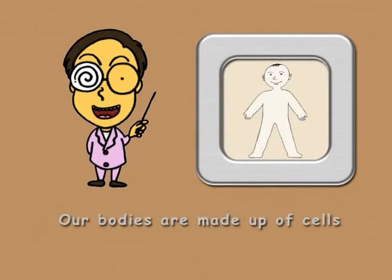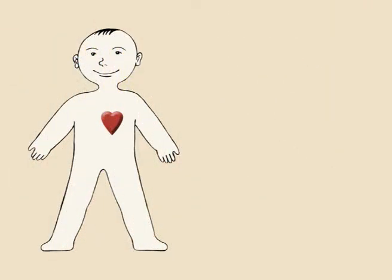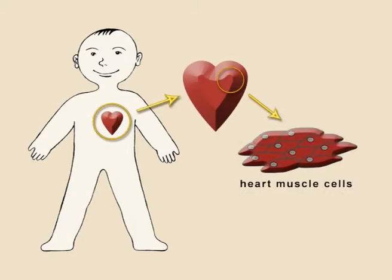Our bodies are made up of millions of tiny parts called cells. There are many different kinds of cells, depending upon their function in the body. For example, the heart muscle cells that keep a heart beating.